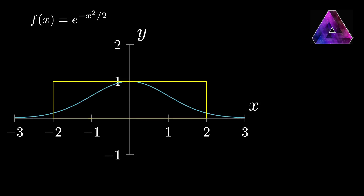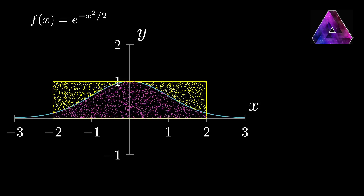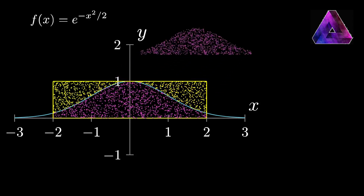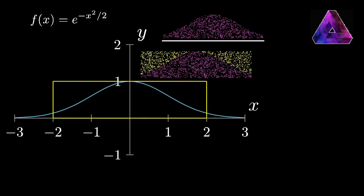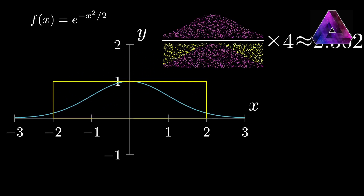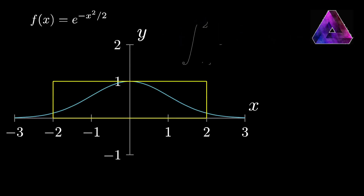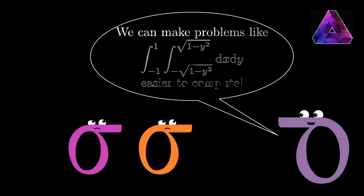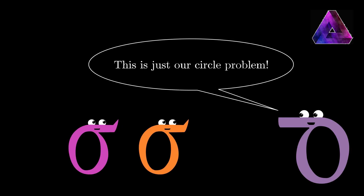So let's do it with 2,000 dots just to see how this would look. Fill it up, divide the dots under the curve by the total number of dots, and we get about 2.362. So what we're finding here is the integral from negative 2 to 2 of our function. And it makes problems that look like this a lot easier to compute. This is just our circle problem re-expressed in terms of calculus.